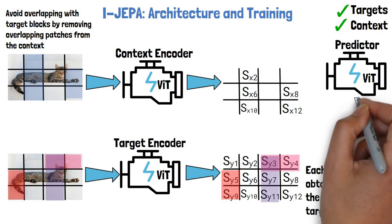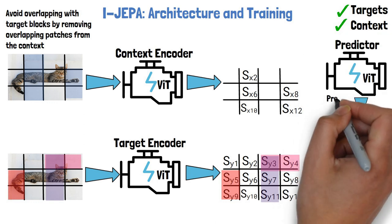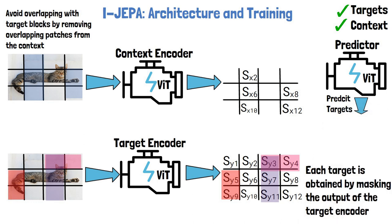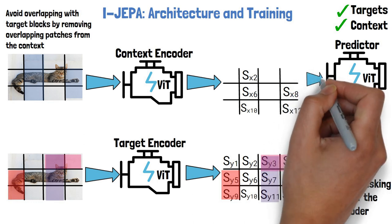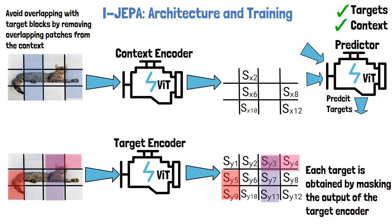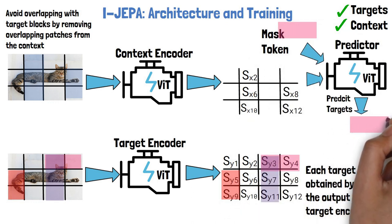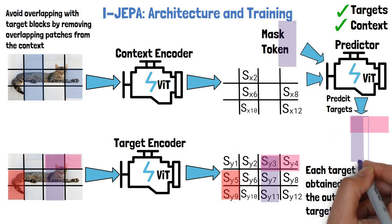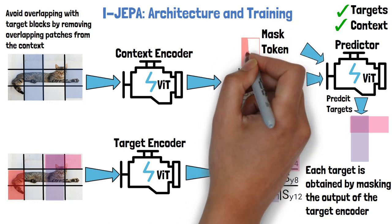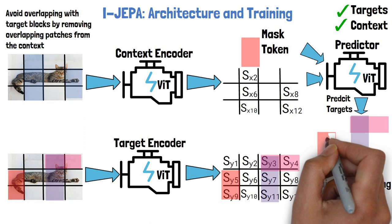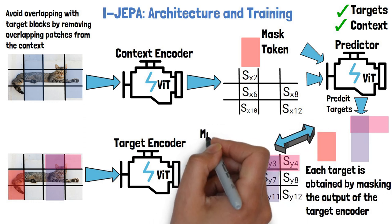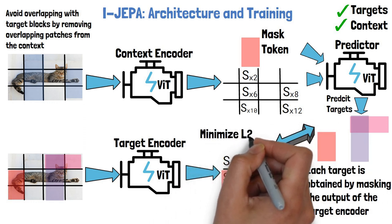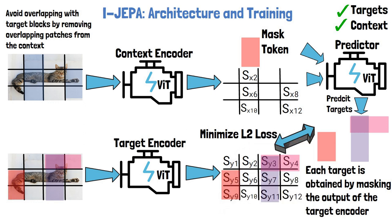Now we use the predictor to predict our three target block representations. For each target block, we feed the predictor with SX — the output from the context encoder — and a mask token. The mask token includes a learnable vector and positional embeddings matching the target block's location. The predictor then predicts the representation of the target block. Finally, we calculate the loss as the average L2 distance between the predictions and the representations obtained from the target encoder.